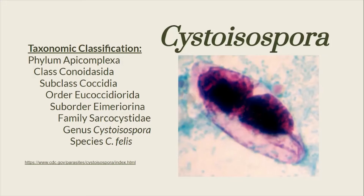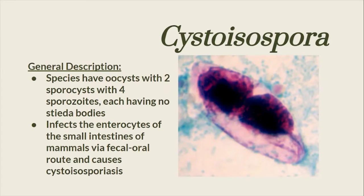Here is the taxonomic classification of the genus Cystoisospora. Species have oocytes with two sporocytes with four sporozoites each, having no Steida bodies. It infects the epithelial sites of the small intestines of mammals via the fecal-oral route and causes Cystoisosporiasis.